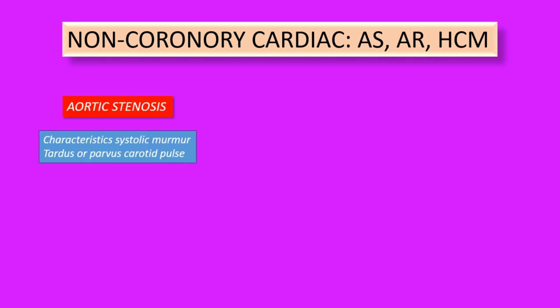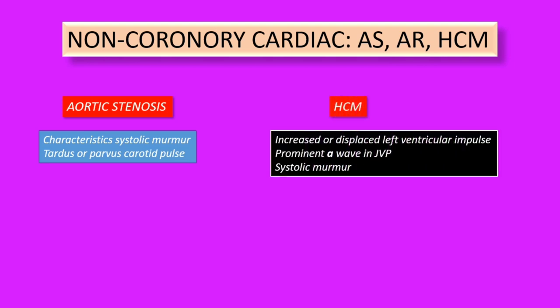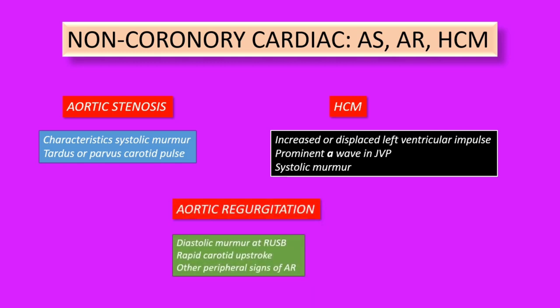Non-coronary cardiac conditions that can present with acute chest pain include aortic stenosis, aortic regurgitation, and hypertrophic cardiomyopathy. In aortic stenosis, there is a characteristic systolic murmur with tardus or parvus carotid pulse. In hypertrophic cardiomyopathy, there is an increased or displaced left ventricular impulse, a prominent A wave in the JVP, and a systolic murmur. Patients with aortic regurgitation have a diastolic murmur at the right upper sternal border, rapid carotid upstroke, and other peripheral signs of aortic regurgitation.